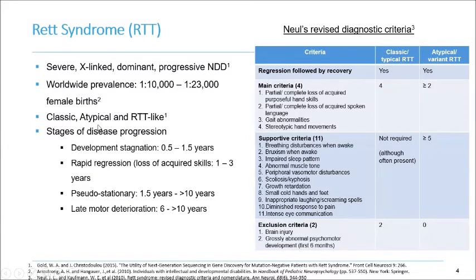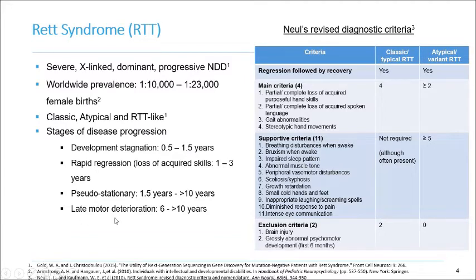Classic Rett individuals follow a very characteristic stage of disease progression that consists of four typical stages. After normal development for about six months after birth, there is a very brief period of developmental stagnation. Then occurs a very rapid regression — that is, the loss of acquired skills such as the ability to walk and the ability to speak. During this phase, there is a very characteristic hand stereotypic motion noticed in affected individuals. This is followed by a brief pseudo-stationary phase and then a very rapid late motor deterioration.